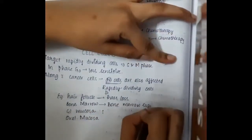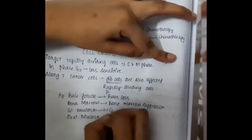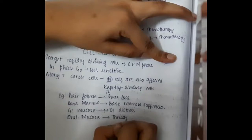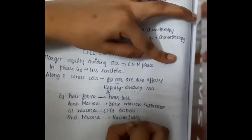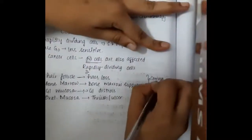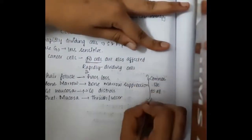If bone marrow is affected, it causes bone marrow suppression. If GI mucosa is affected, it causes gastrointestinal distress. If oral mucosa is affected, it causes oral thrush or cancer. These are common side effects to all the drugs.